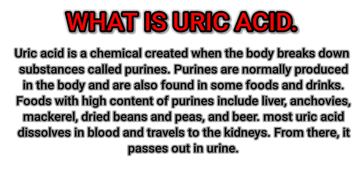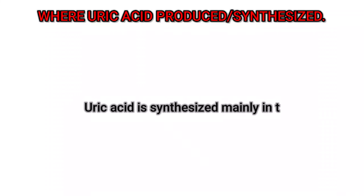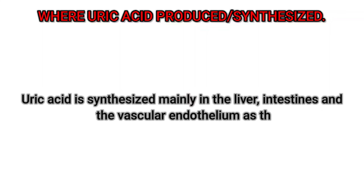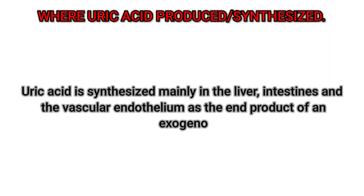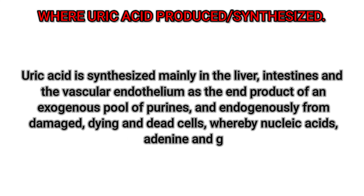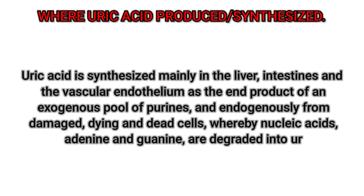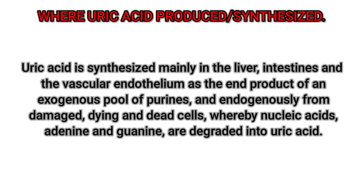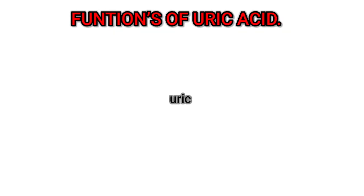Most uric acid dissolves in blood and travels to the kidneys, from there it passes out in urine. Uric acid is synthesized mainly in the liver, intestines, and the vascular endothelium as the end product of an exogenous pool of purines and endogenously from damaged, dying, and dead cells.